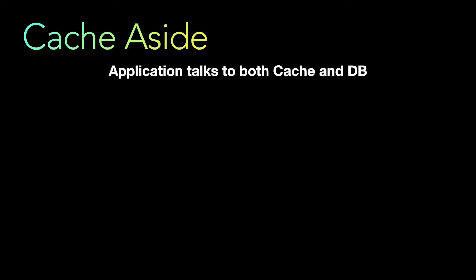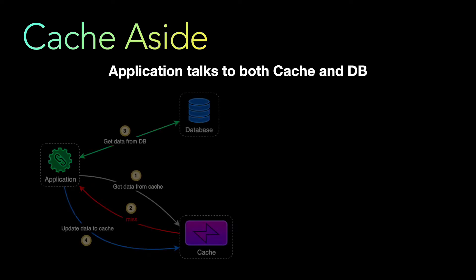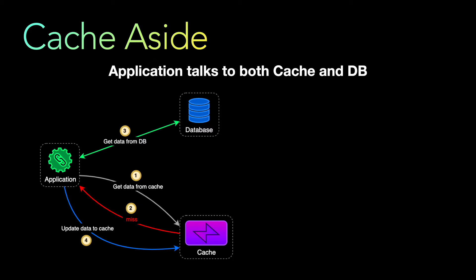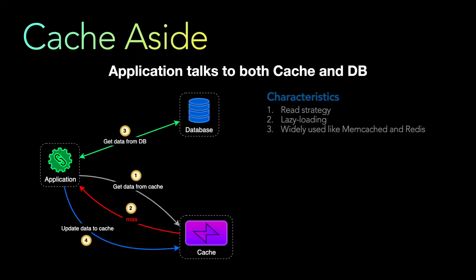The cache-aside strategy is primarily when your application talks to both the cache and the database. Looking at the architecture, the application first gets the data from the cache. If the data is not present, it will be a cache miss, and in that case the application reads the data from the database directly and then updates the cache.